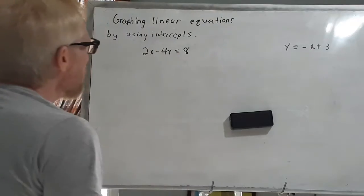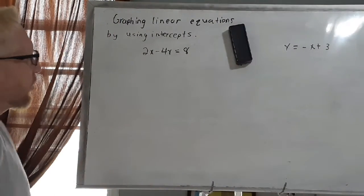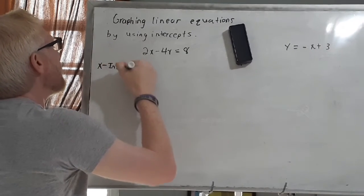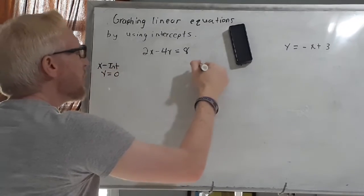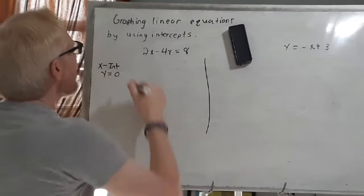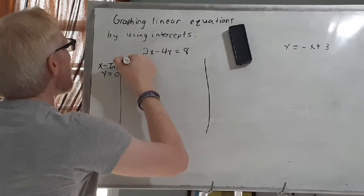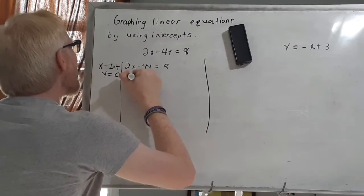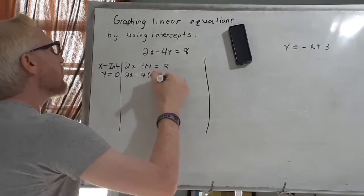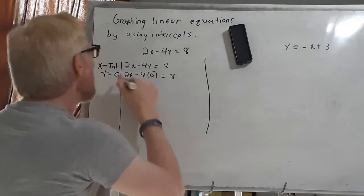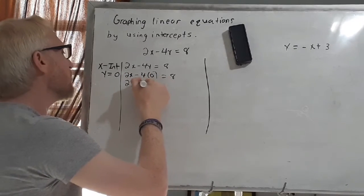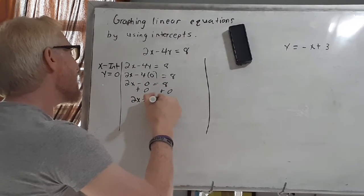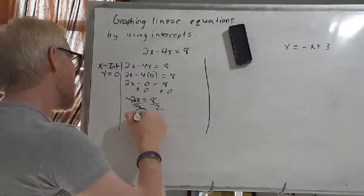The first problem says 2x minus 4y equals 8. I want to find my x and y intercepts and graph my function. Remember, I'm going to start with my x-intercept, and when looking for the x-intercept, always remember that y equals 0. So I'm going to take my equation and change it to 2x minus 4 times 0 equals 8 — I just plug in 0 where the y was. So 2x minus 0 equals 8, which gives 2x equals 8, and dividing by 2, x equals 4.